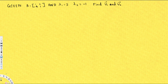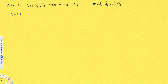This problem gives us matrix A = [1,4;1,1] with eigenvalues λ1=3 and λ2=-1, and asks us to find the eigenvectors v1 and v2. These are the eigenvalues and we need to find the corresponding eigenvectors. For this kind of question, we set (A - λI) equal to 0 — that is, we find the null space.